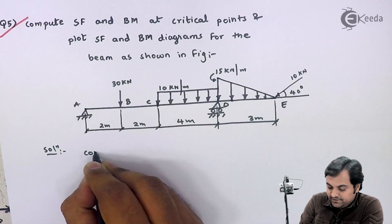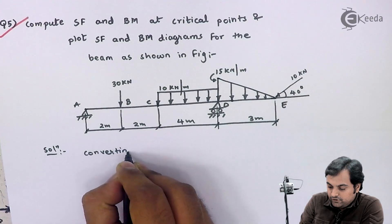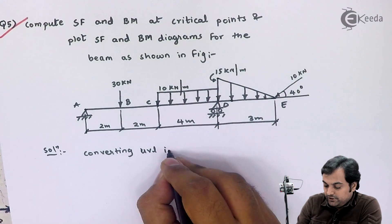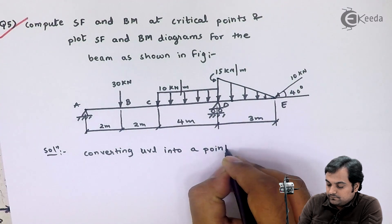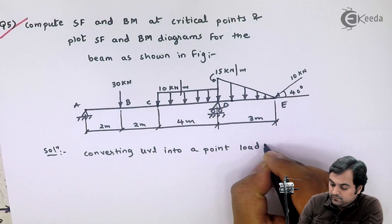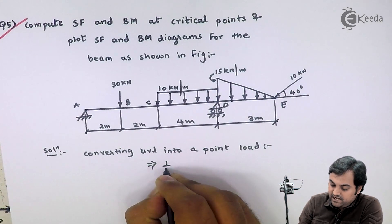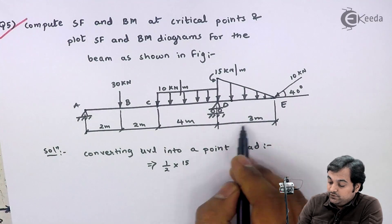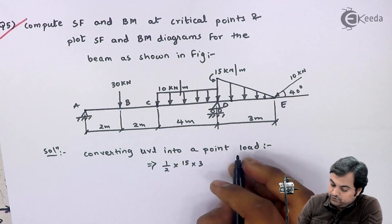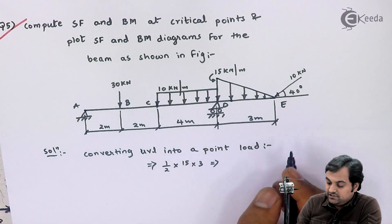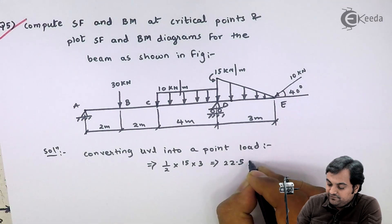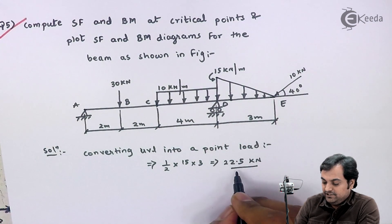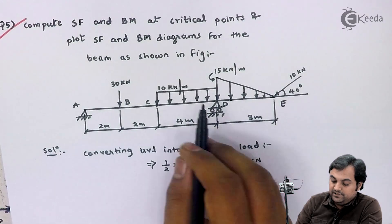In the solution, I will first write down converting UVL — that is uniformly varying load, which is a triangle — into a point load. The conversion is half into base, which is 15 kilonewton per meter, into height which is 3 meters. Therefore I will get this conversion as 22.5 kilonewton. So I can replace this UVL by just a single load of 22.5 kilonewton.